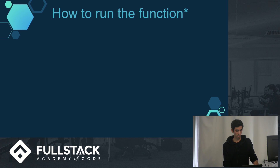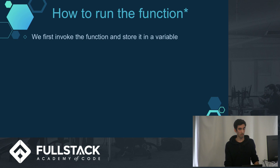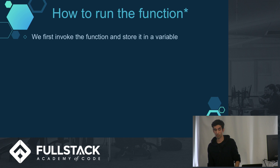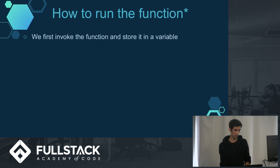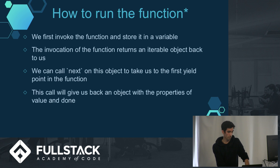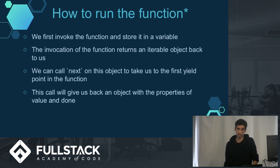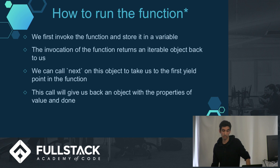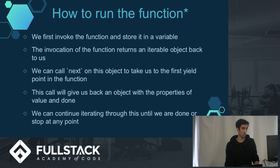Here's a summary of how to run the function. We first invoke the function and store it in a variable. When we actually run the function, we don't go through the code, but it gives us back an object which we can use to iterate through it. On that object, you can call next, and then it'll break at the first yield specified inside the function. That object returns a value, which is what is to the right of the yield expression, and done, which indicates true or false on whether the function is completed. We can keep doing this until we're done, or stop at any point, and it won't affect any of the rest of the code.